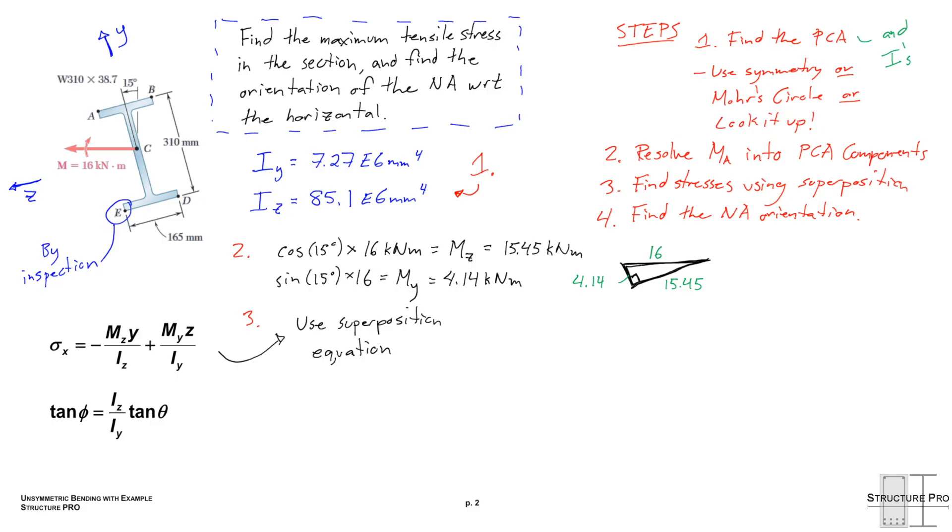And now by inspection, we know that point E is actually going to be the point of maximum tension. You can actually tell that just from this 16 kilonewton meters. The E is the furthest away, and just intuitively you can kind of see that. So let's find the y component down from the middle to E, and then the z component across from the middle. So that's negative 155 millimeters and then 82.5 millimeters in the z. And we can just plug that into our equation here, and everything works out quite nice. We note that we have times 10 to the power of 6 on the bottom and times 10 to the power of negative 6 on top just to get everything in Newton millimeters and then as a consequence MPa.